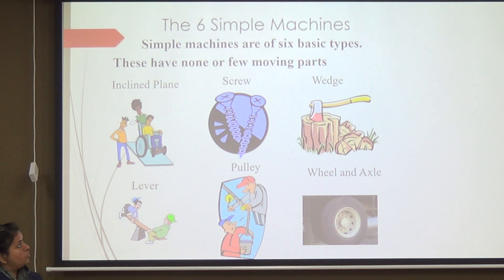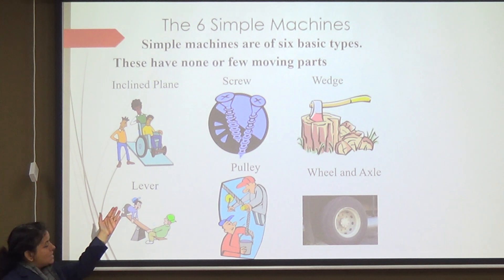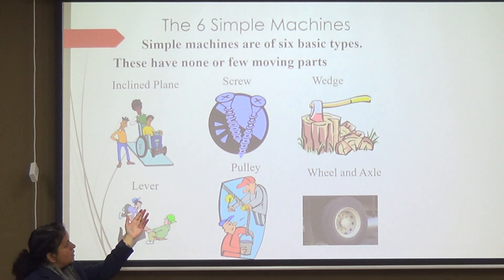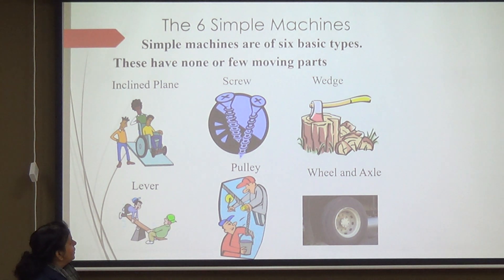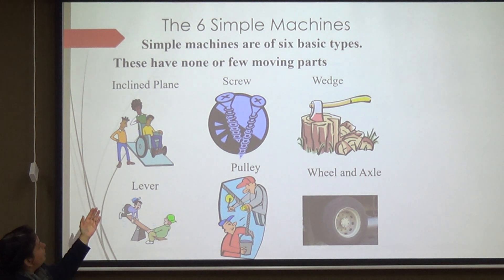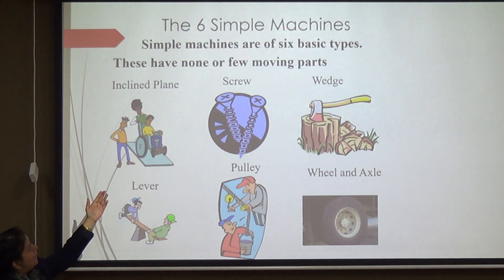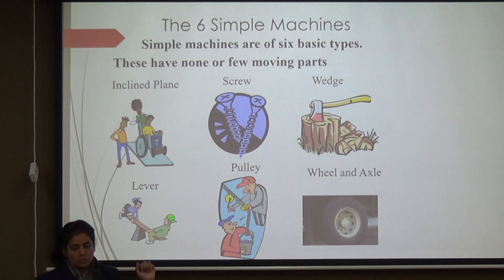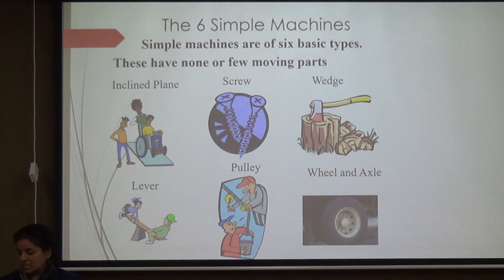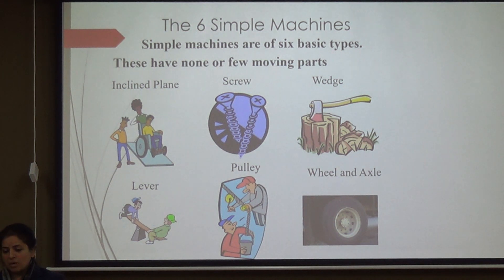Simple machines are of six types: number one is the lever, second is the pulley, third is the wheel and axle, then we have the inclined plane, the screw, and the wedge. These are the six machines which we will take one by one.